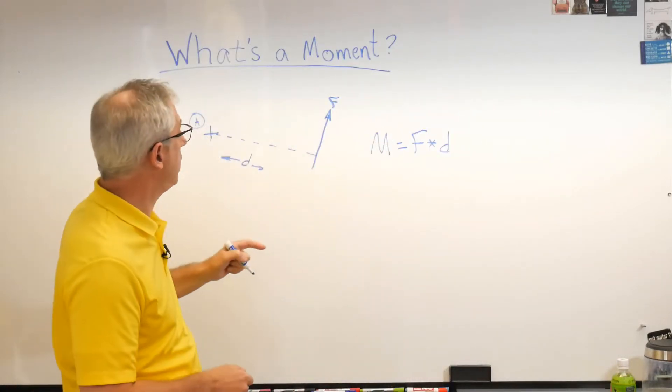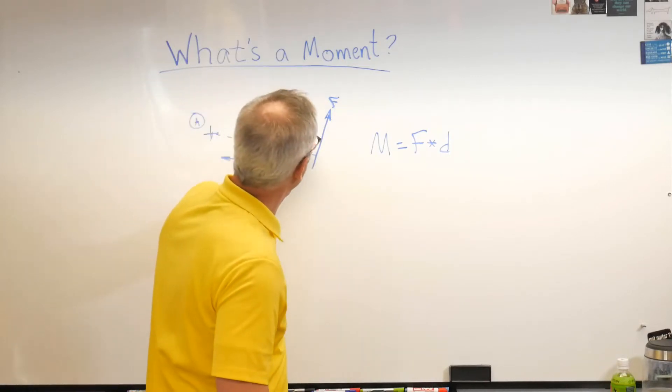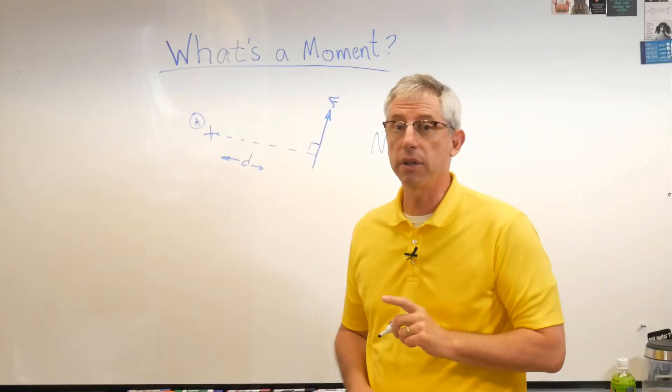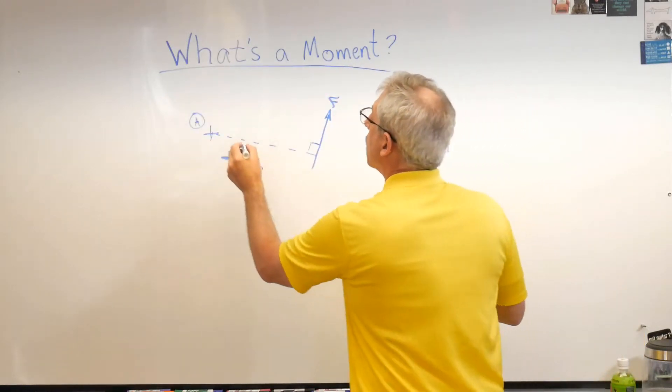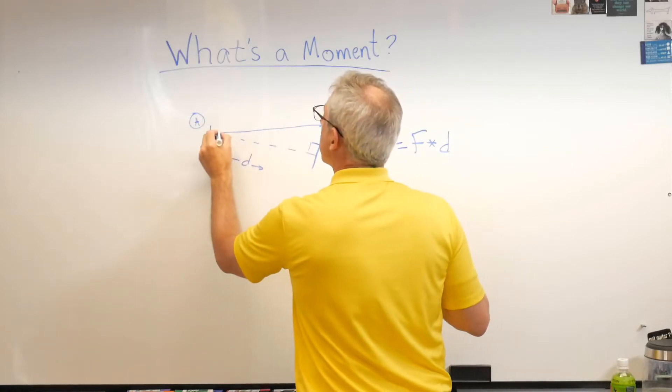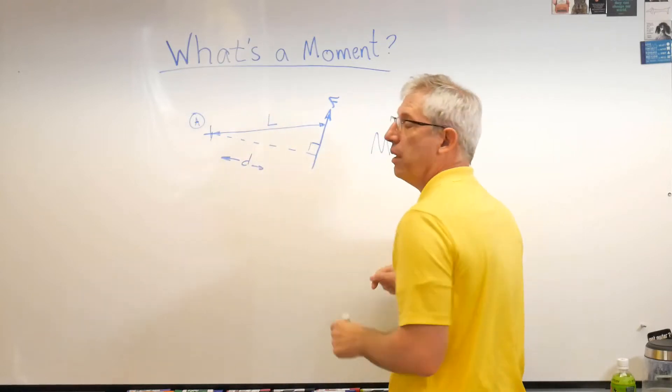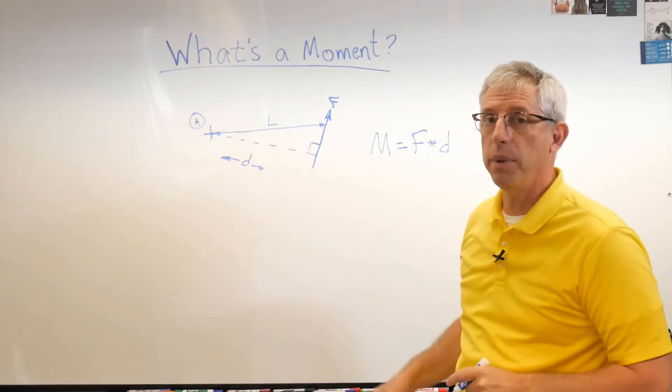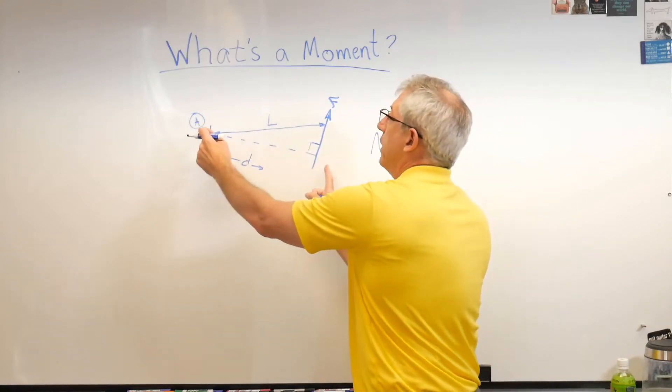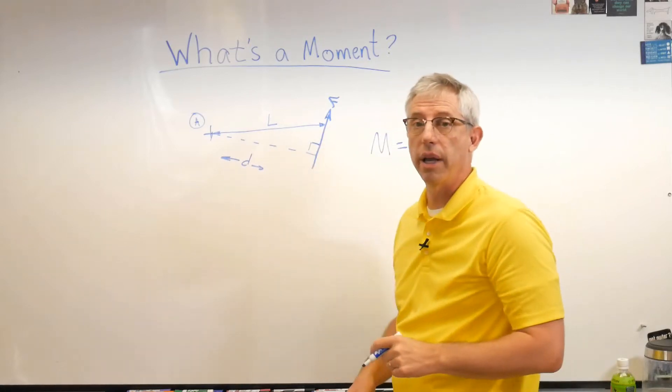The big idea here is you need to know what the distance is, and it has to be a perpendicular distance. Perpendicular distance is what matters. The way I drew this, that right there is another distance. I'll call that maybe L to separate it from D, but that's not perpendicular. So this force is not acting at distance L, it's acting at distance D.